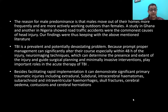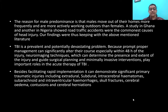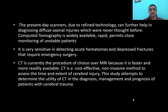Traumatic brain injury is a prevalent and potentially devastating problem, because prompt proper management can significantly alter its course, especially within 48 hours of injury. Neuroimaging techniques that can determine the presence and extent of injury and guide surgical planning and minimally invasive interventions play important roles in acute therapy of TBI. CT can demonstrate primary traumatic injuries like EDH, SDH, IVH, and present-day scanners can even diagnose diffuse axonal injuries. CT is currently the procedure of choice over MRI because it is faster, more readily available, cost-effective, and non-invasive. This study attempts to determine the utility of CT in the diagnosis, management, and prognosis of patients with cerebral trauma.